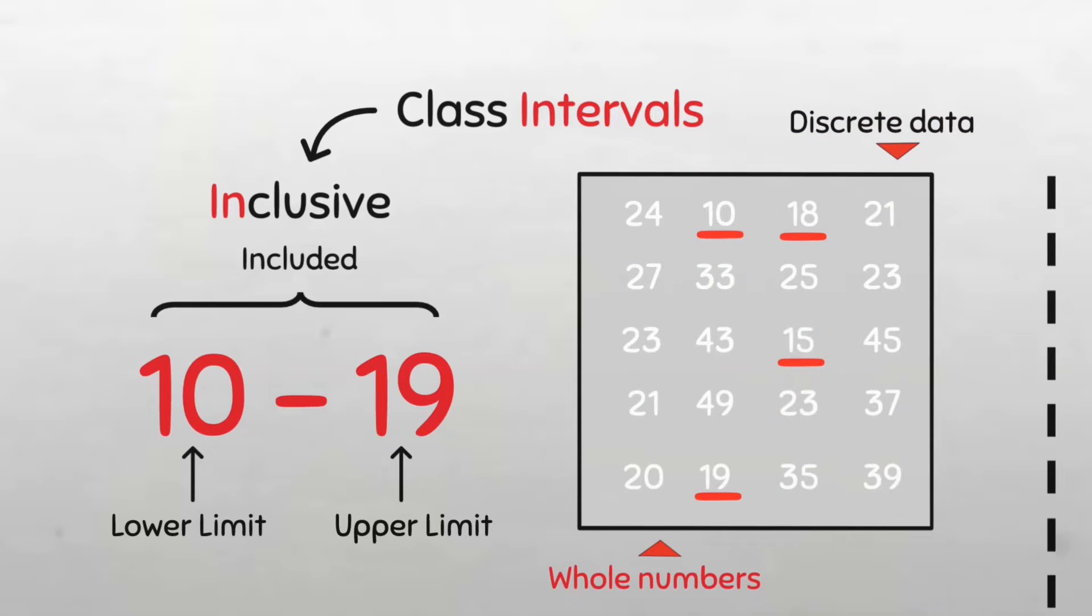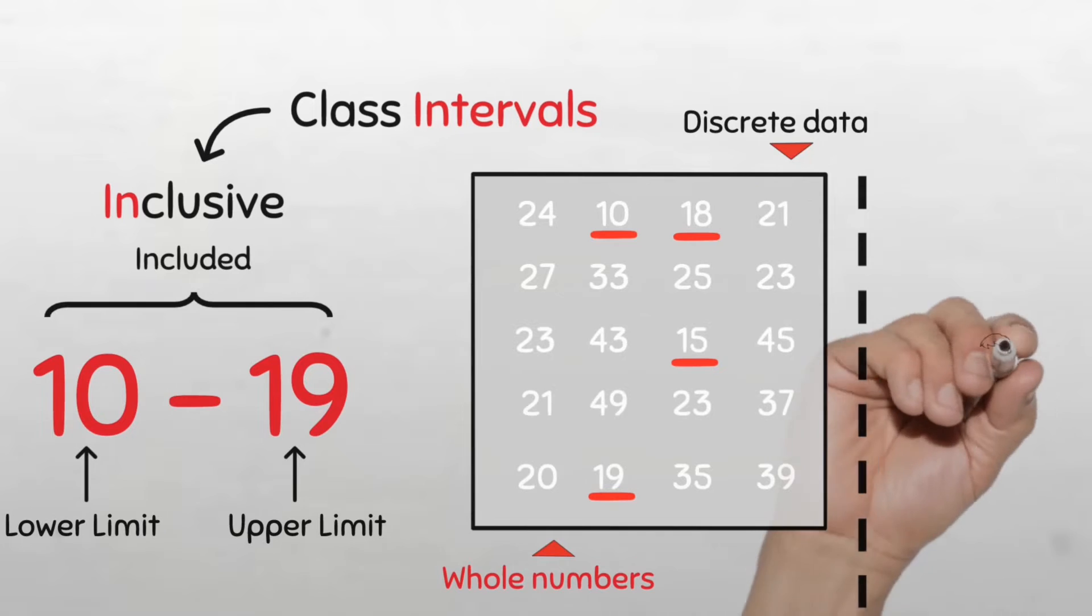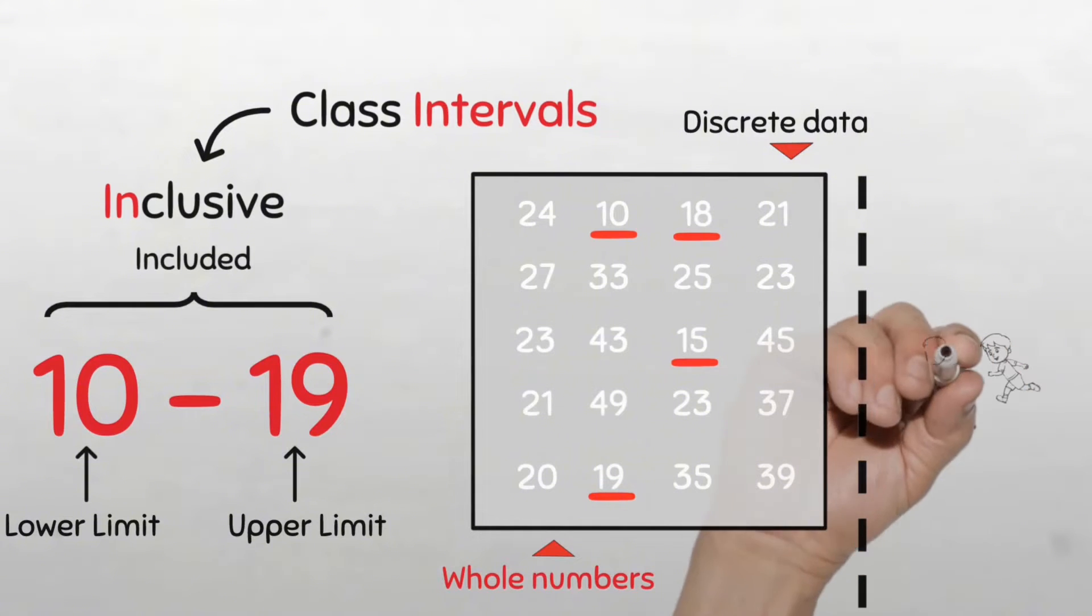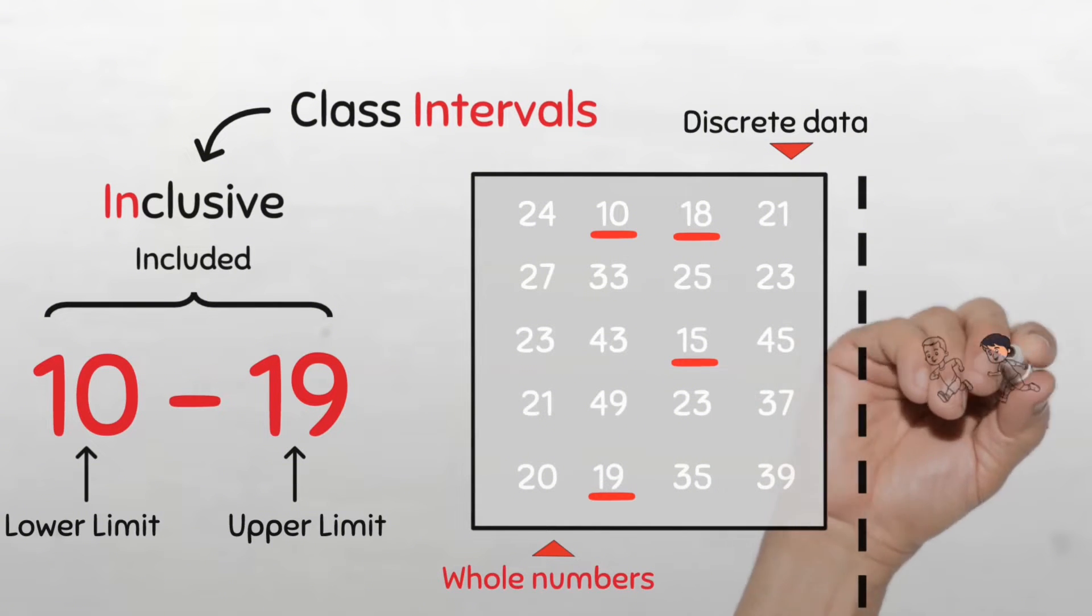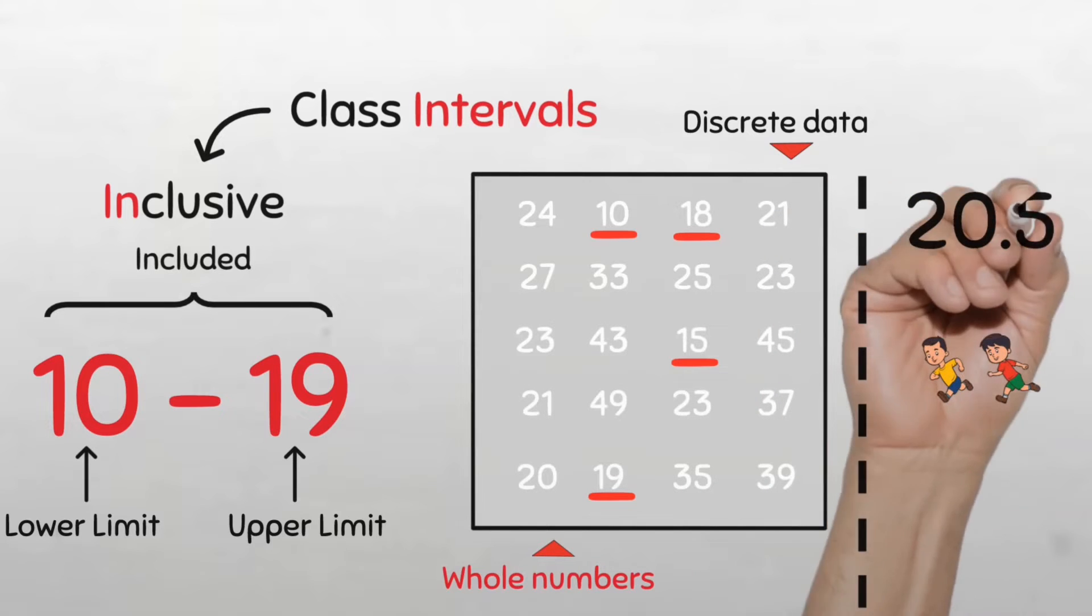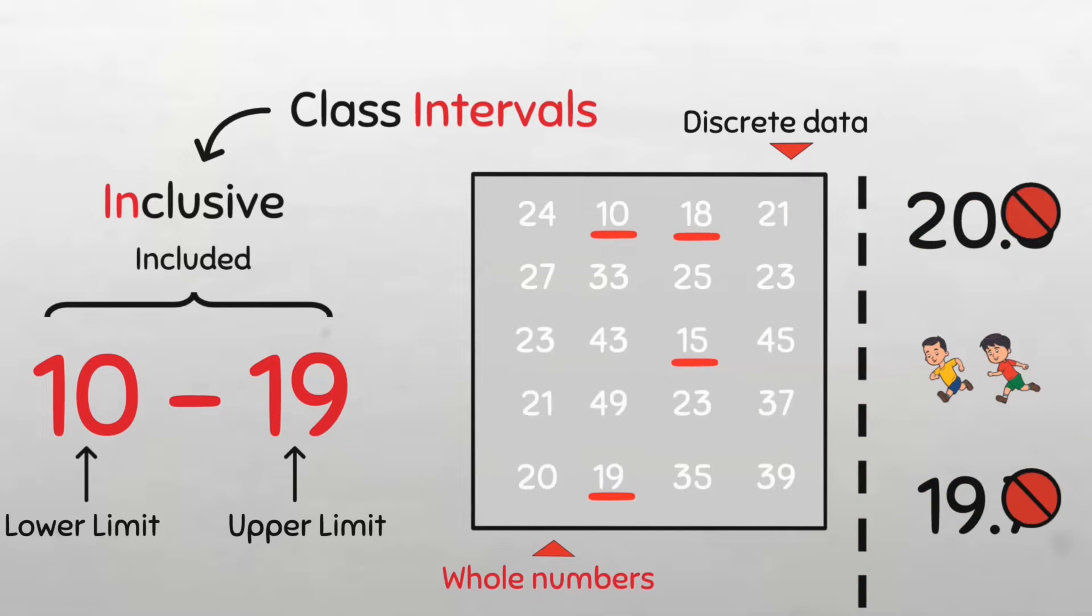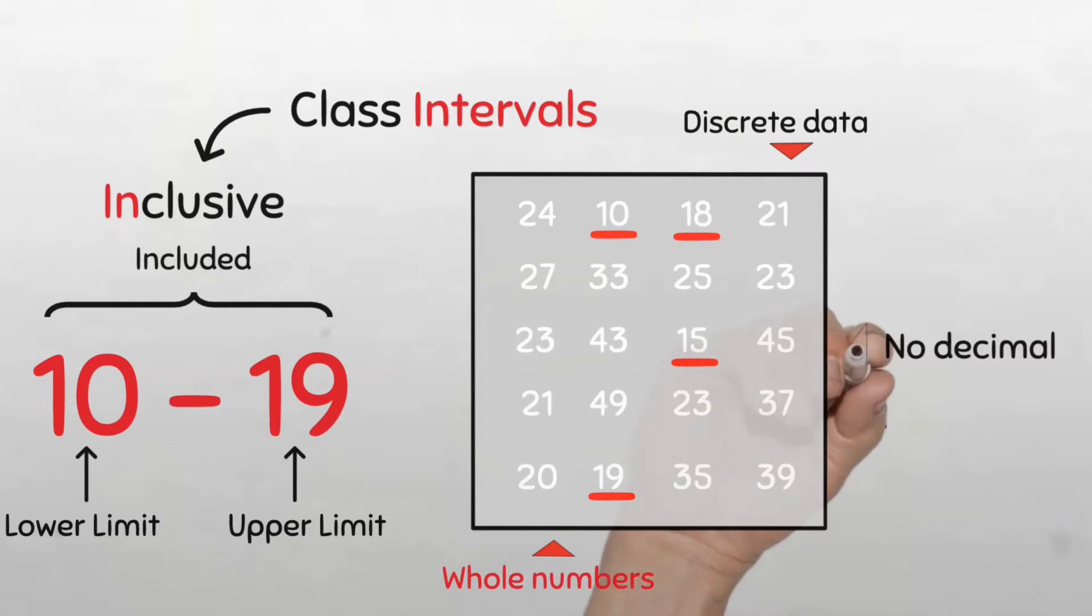So every data point can easily fit into one class. Like in this example of children in a pediatric clinic, because we can only have whole numbers for this kind of variable, we can't have 20.5 children or 19.7 children. So we use the inclusive type of class when our data has no decimals or fractions.